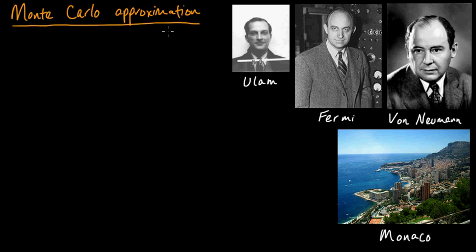The idea behind Monte Carlo approximation is extraordinarily simple — trivial in some sense — so it has surely been around for ages. But it really only started to take its modern form, with people developing the mathematics, in the 1940s. Some giants of mathematics and science were involved. In the middle here is Enrico Fermi, an Italian physicist who won the Nobel Prize for physics in 1938 at the age of 37, very young, for his work in radiation.